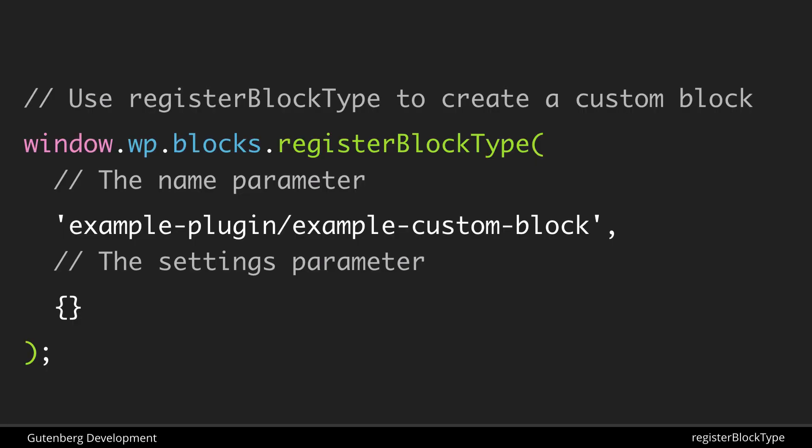The registerBlockType function takes two parameters. The first is the name parameter — a computer-readable name with two parts: a namespace and the block name itself, separated by a slash. For example, 'example-plugin/example-block'. If you're building a plugin you'd give all your blocks a common namespace. The second parameter is a settings object that takes a number of properties we'll look at in a moment.